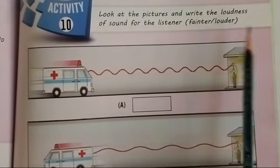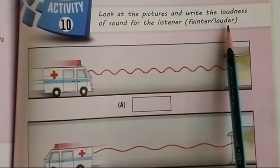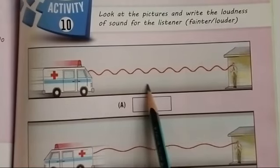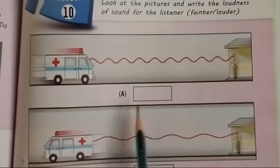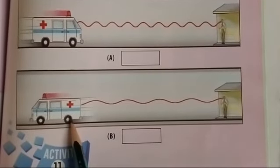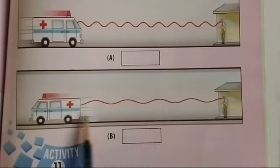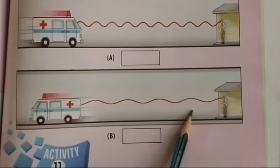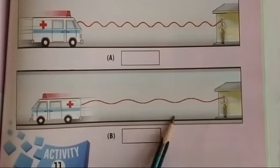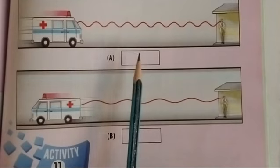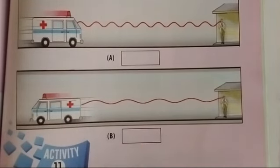Very good, louder. Why? Because distance is close. So we will write louder here. Now look at the second picture. This ambulance is going away from this man. Distance is further. So how is the sound of loudness? Louder or fainter? Very good, fainter. Because now distance is going further. Let's write them.